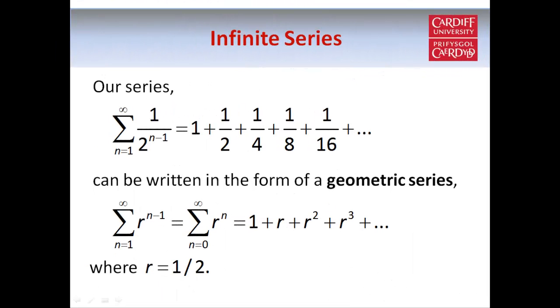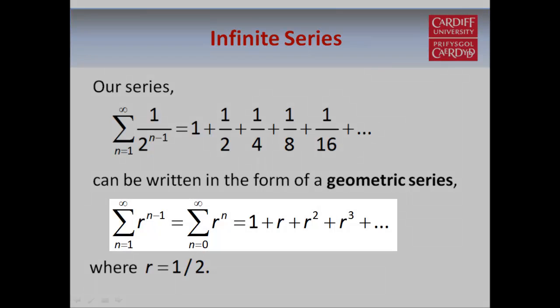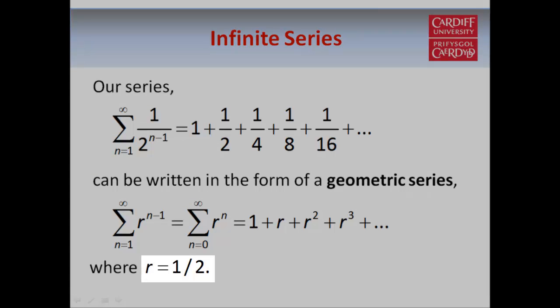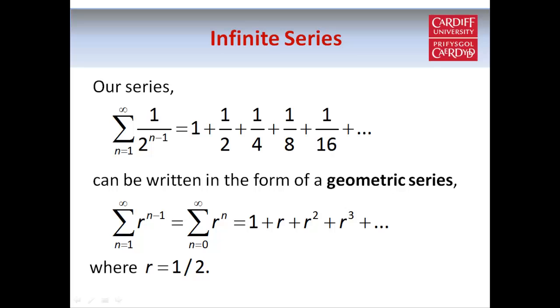So it turns out that our series 1 plus a half plus a quarter etc is a geometric series and this is a very special type of series where we have some constant multiplier which takes us from one term to the next term. So the general form of a geometric series is 1 plus r plus r squared etc where r is the constant multiplier. Notice that you can write it with the index variable starting from a value of 0 or 1. It's exactly the same thing provided that you adjust the power of r in the summation. And if you compare this to our example you can see that in our case we have r equals a half because every term in our series from the second term onwards is half of the term before it.